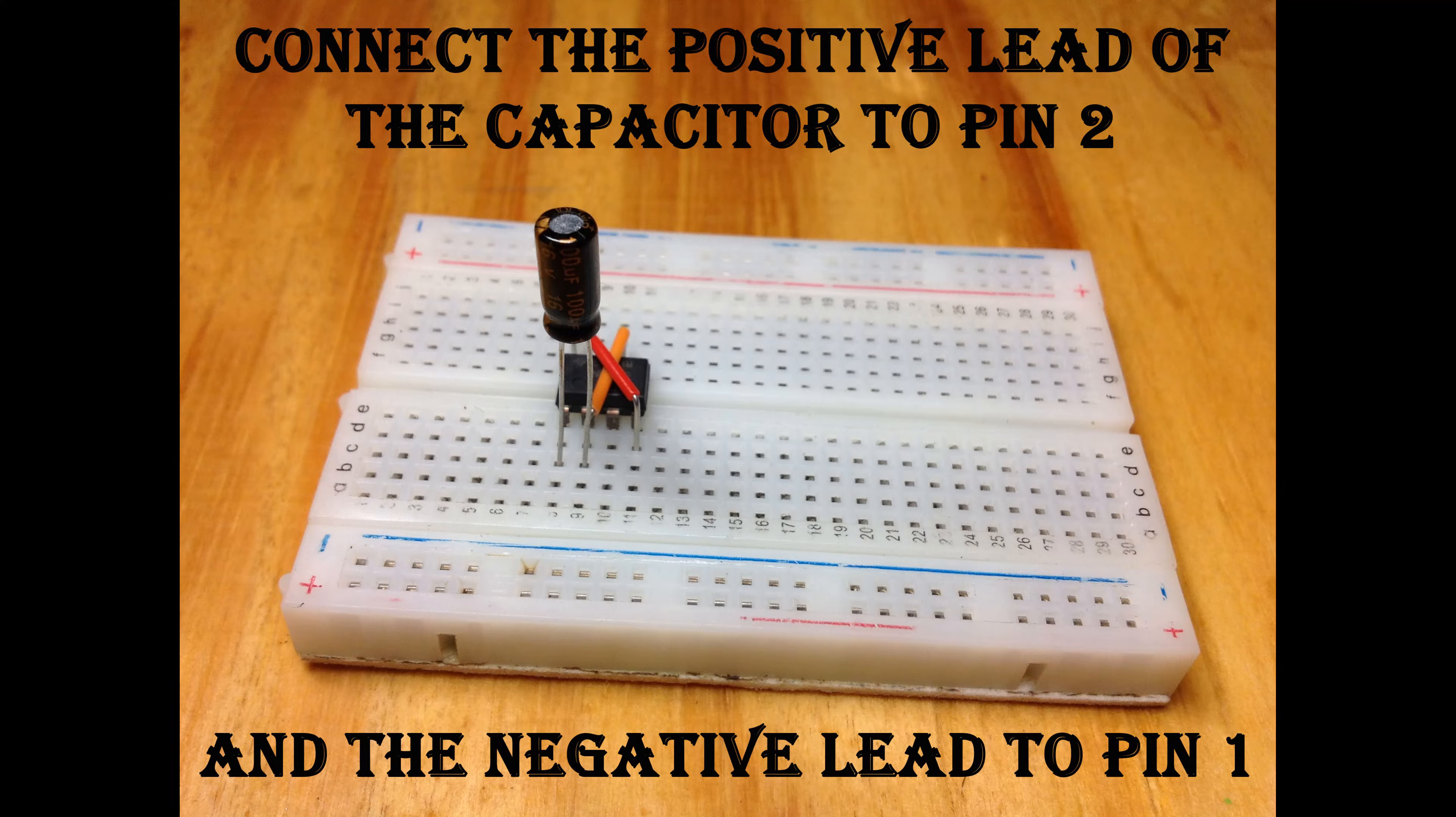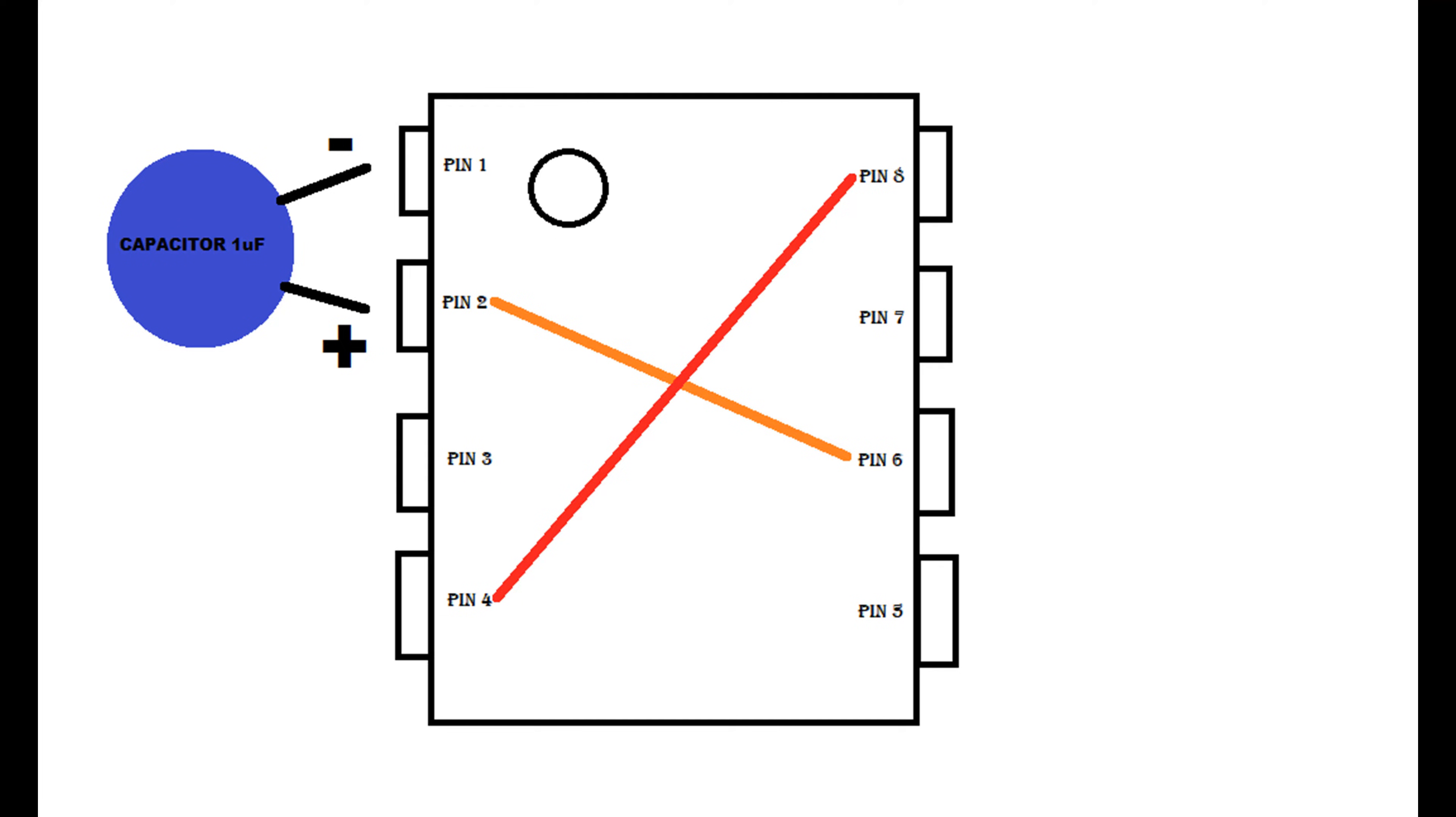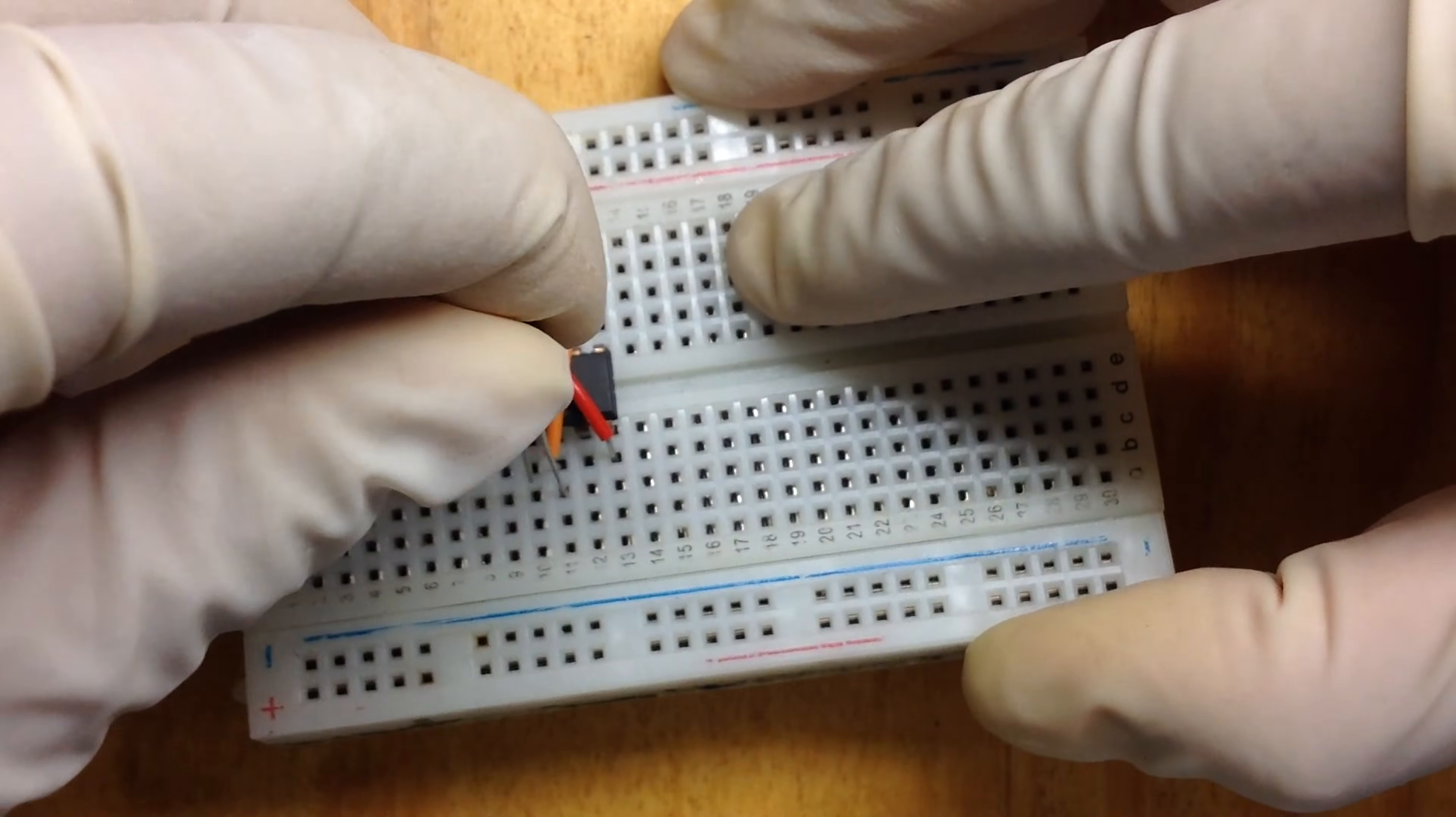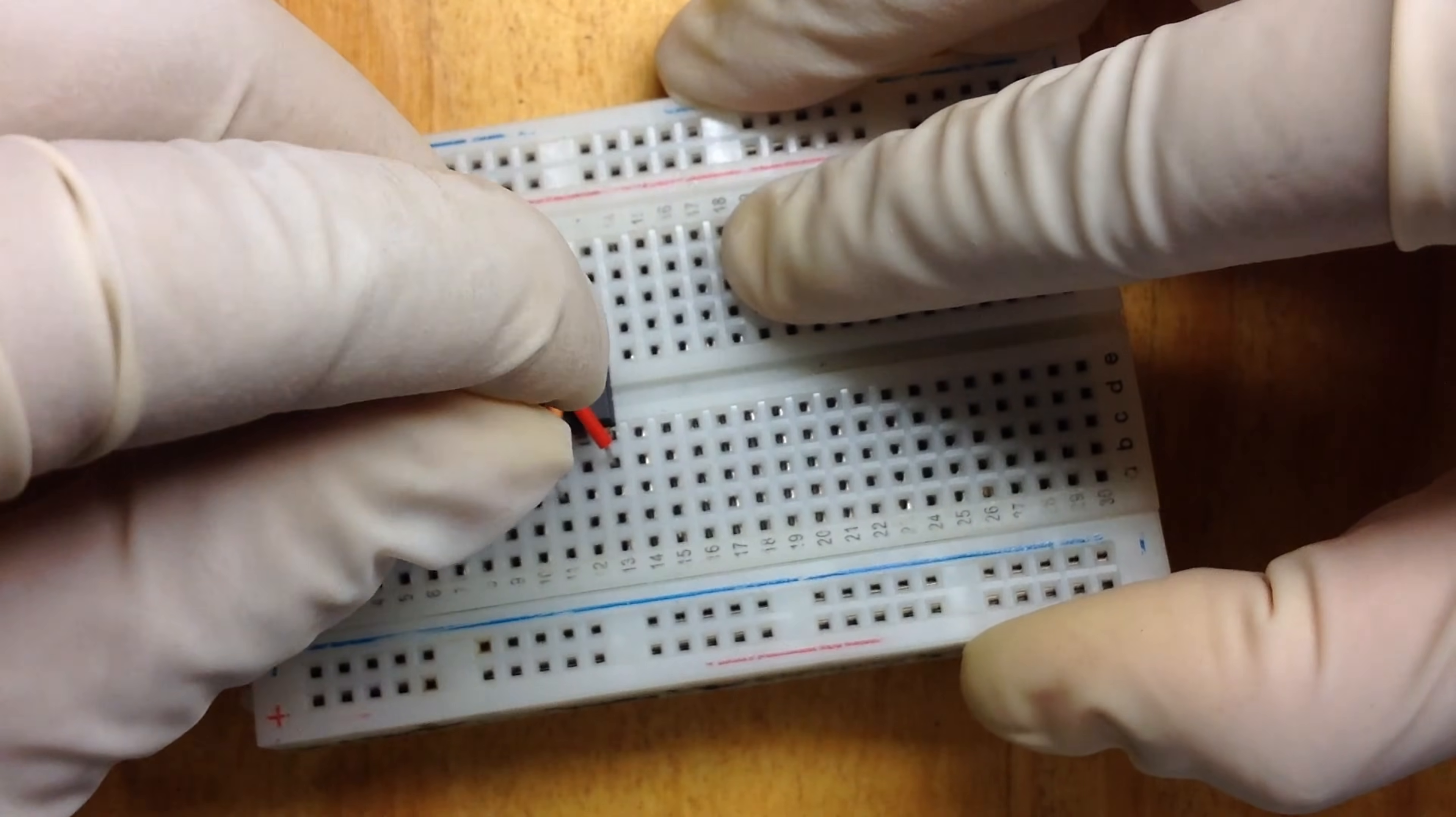Connect the positive lead or the anode of the capacitor to pin 2 of the IC and the negative to pin 1 of the IC.